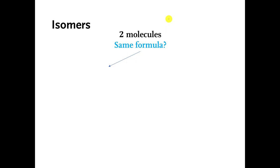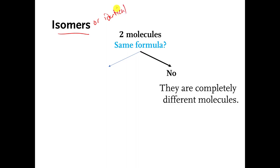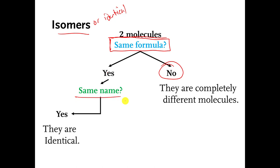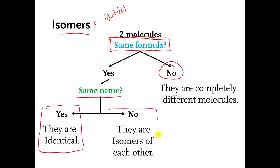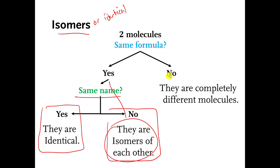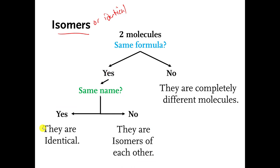Here's a flowchart. If I show you two molecules and ask whether they are isomers or identical, you basically have to ask a series of questions. First, do they have the same formula? If not, they're completely different molecules — not even isomers. If they do have the same formula, then ask: do they have the same name? If yes, they are identical. If no, but they have the same formula, then they're isomers of each other. You can write this flowchart down and use it on a quiz or test.